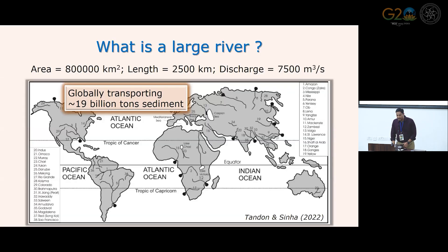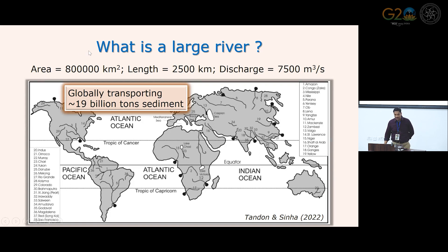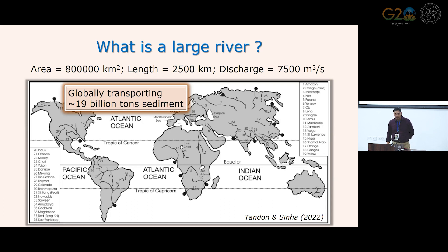I will start with what is a large river and how to identify when we say it is a large river. Based on global data of around 38 large rivers, it is defined in terms of parameters like area, length, and discharge. Such large rivers globally transport 19 billion tons of sediment each year. On this slide I want you to remember the value: discharge 7,500 cubic meters per second.